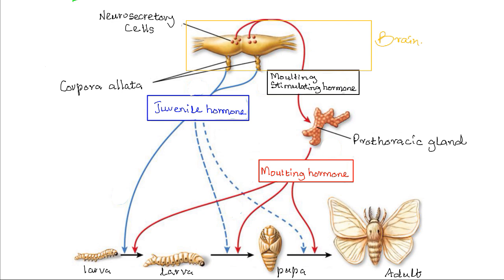During the larval stages, the brain part — that is, the corpus allata — secretes the juvenile hormone. Here you can see the corpus allata secreting the juvenile hormone during the larval stages.